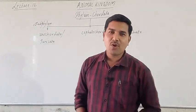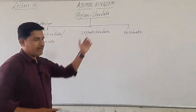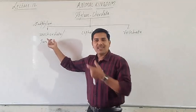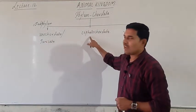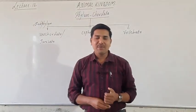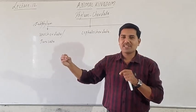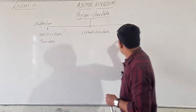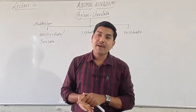What exactly do these names mean? Urochordata means the animals possess notochord in the tail region. Cephalo means head region — so Cephalochordata means these animals possess notochord from head to tail, which is persistent throughout the life of the animal. In Vertebrata, the notochord is replaced by the vertebral column or backbone.